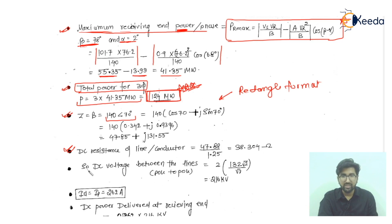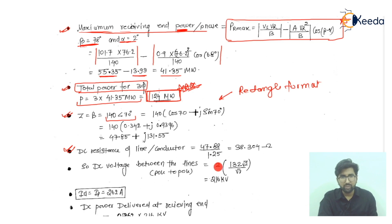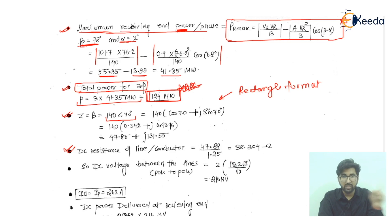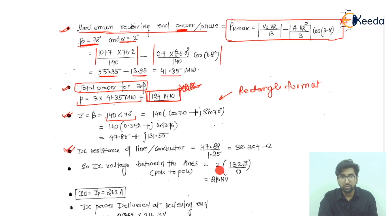For the DC voltage between the lines — that is, the pole-to-pole voltage — we calculate: 2 × (132 × √2 / √3). Here 132 kV is the line-to-line RMS voltage; we multiply by √2 for the peak value, divide by √3 to convert to per-phase, and multiply by 2 for pole-to-pole. This gives 216 kV.